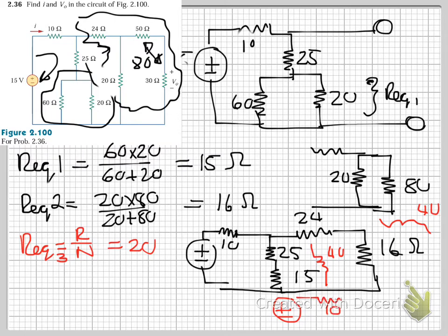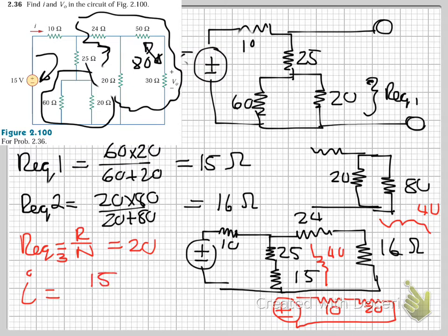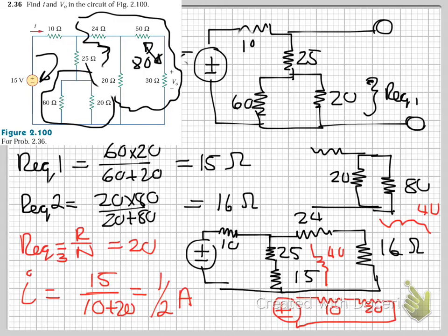The circuit now reduces to 10 ohms and 20 ohms in series with the 15 volt source. Therefore, the current i = 15 / (10 + 20) = 0.5 amperes. Now the next step is to find vo.